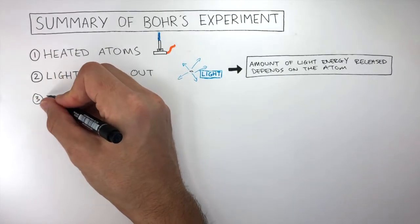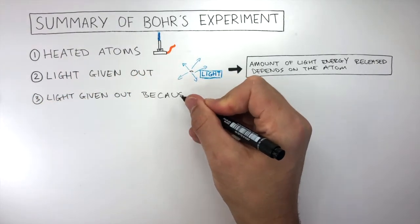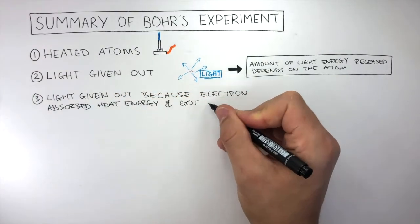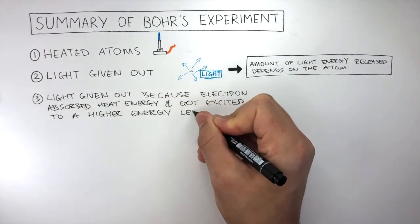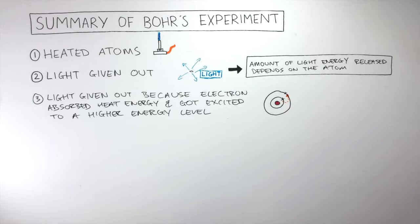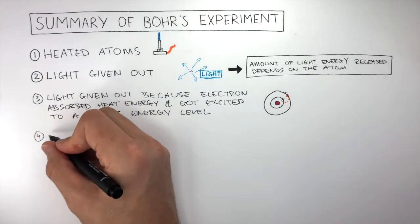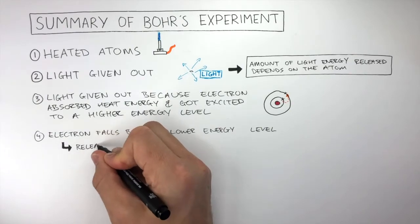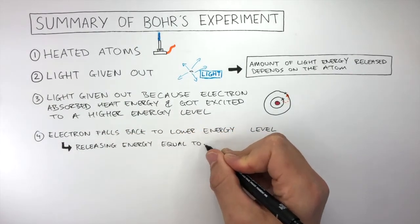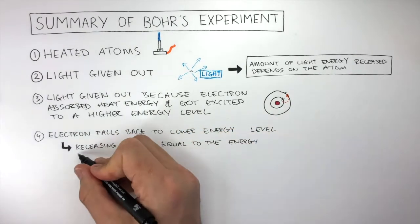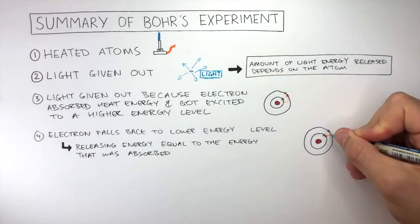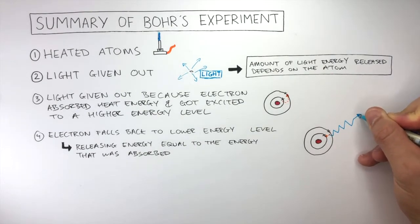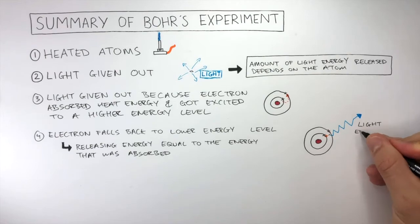Third, light energy was given out because the electron absorbed heat energy and got excited to a higher energy level. Fourth, the electron falls back to the lower energy level, releasing energy equal to the amount of energy absorbed. This zigzaggy blue line moving away from the atom represents the light energy released.